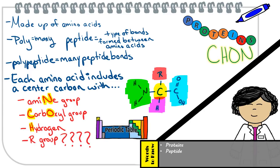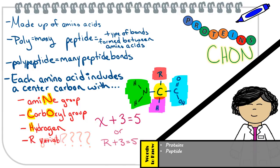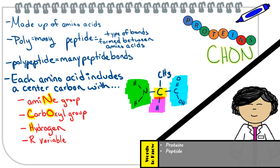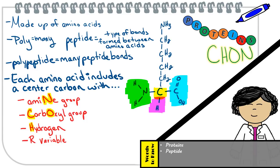The R group is not going to be found on the periodic table as an element. The R group is actually used to represent various carbon groups that may be attached to a particular amino acid — just like X represents different values in math. There are actually 20 common amino acids, which all differ solely on their R groups, which makes them uniquely shaped and named.